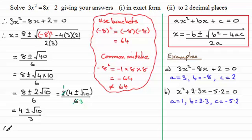So for part 1, this is my exact form. I've got that x can either equal 4 plus the square root of 10 all divided by 3, or x equaling 4 minus the square root of 10, all divided by 3. And that's my exact form.